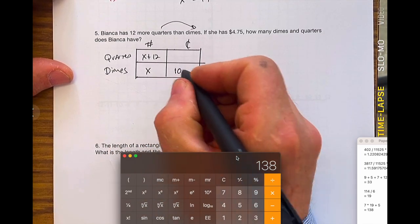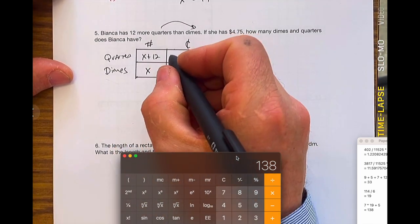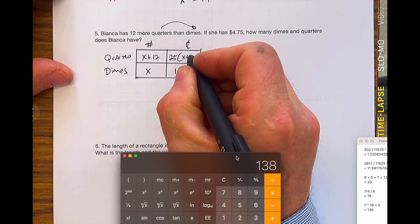Each dime is worth 10 cents, 10X. Each quarter is worth 25, 25X plus 12.